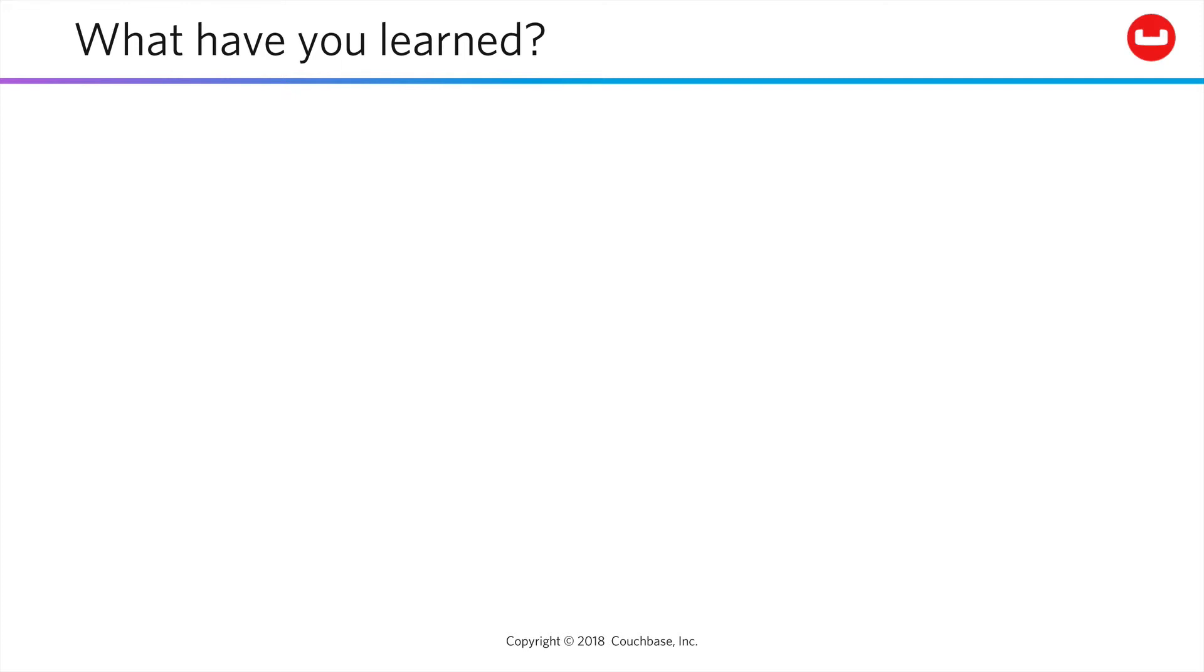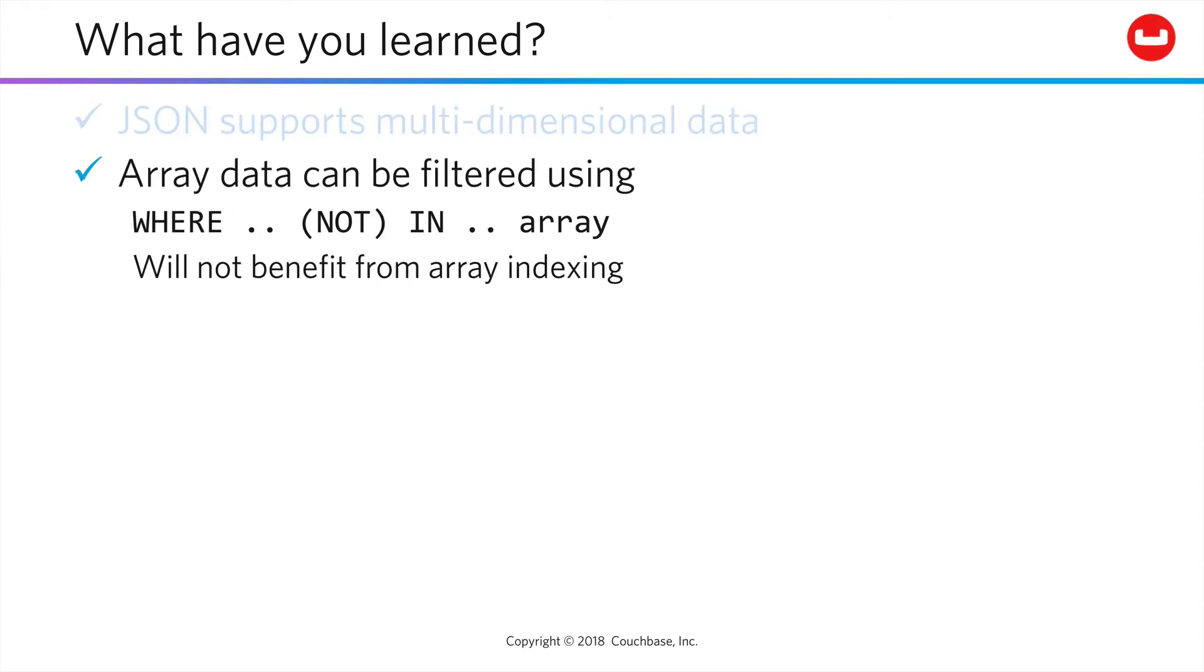So what have you learned? JSON makes multidimensional data easy, using objects, arrays, and combinations of these. You can filter for scalar values in an array using this simple WHERE IN syntax.